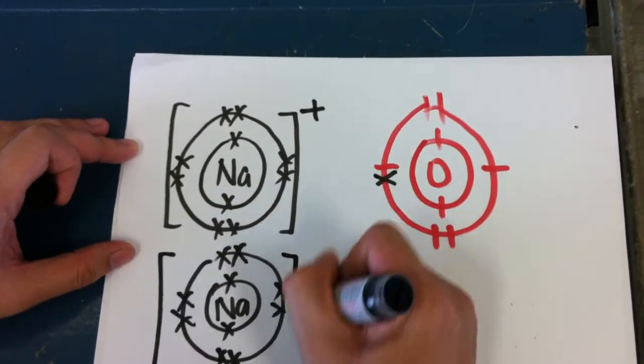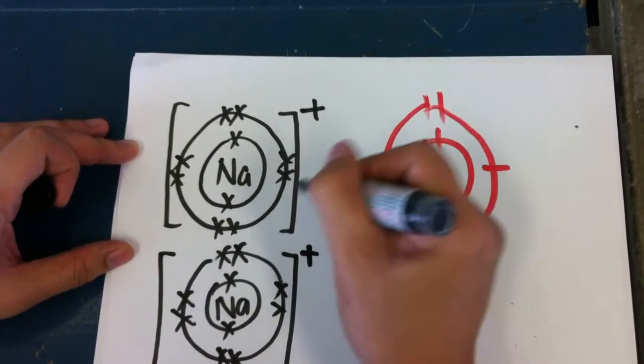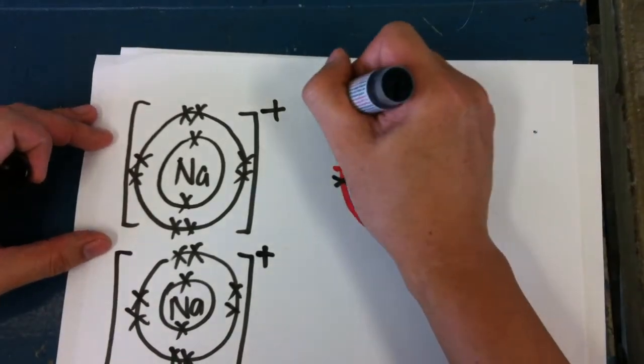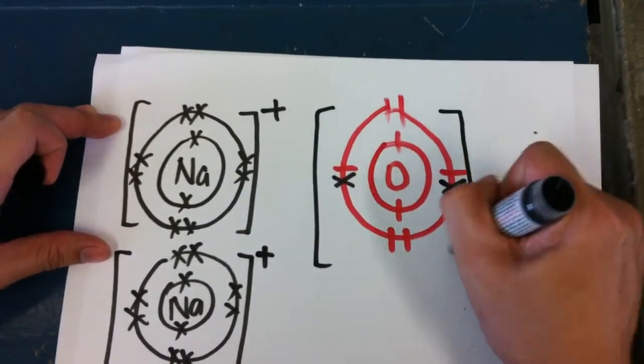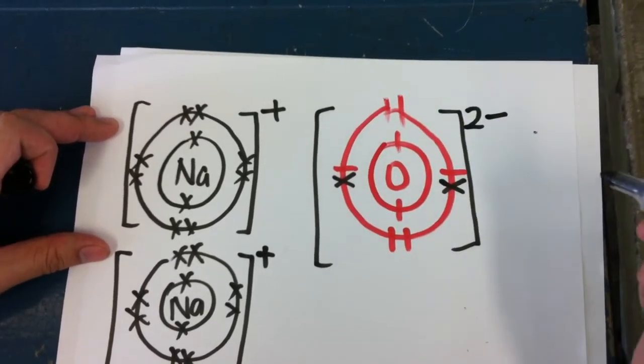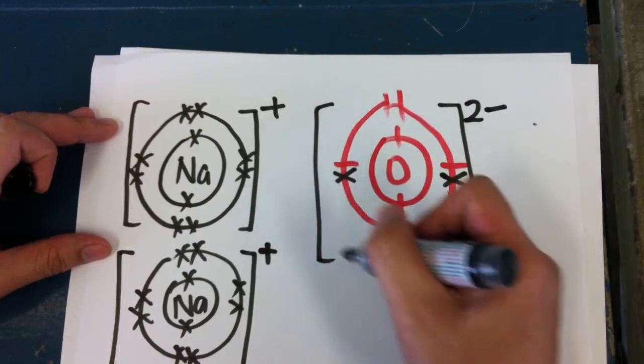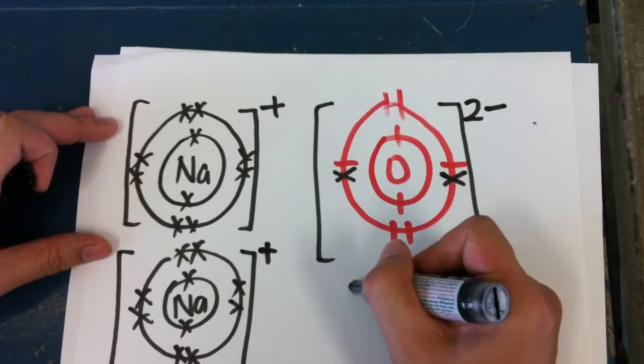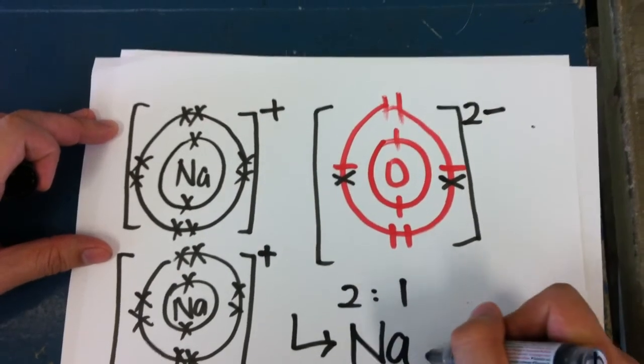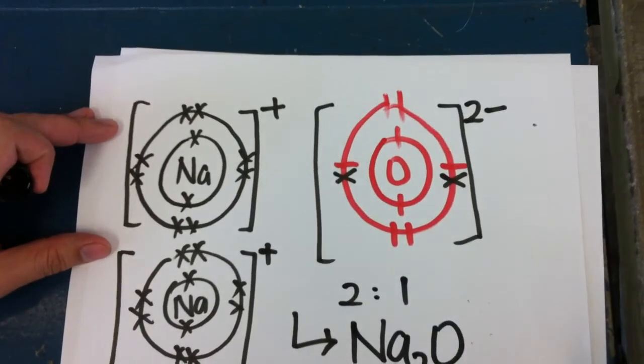Now oxygen has a stable noble gas structure. It takes in two electrons, and because it takes in two electrons, it becomes 2-. The ratio of sodium to oxygen is 2 is to 1. Therefore, the formula of sodium oxide is Na2O.